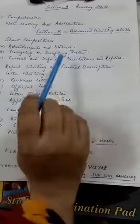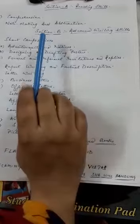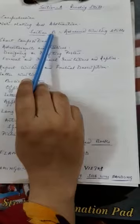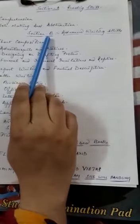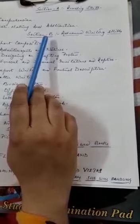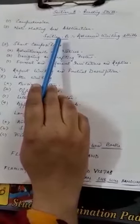The remaining chapters are short compositions and the Flamingo poetry section. But still, we will be revising starting with chapter 1, that is comprehension. Next class we will start with comprehensions. Thank you.